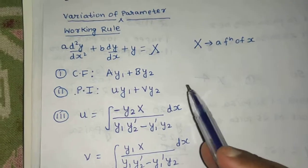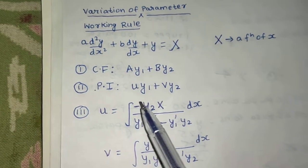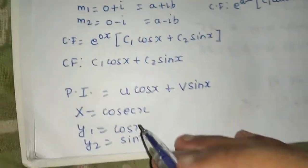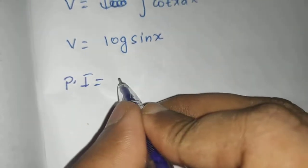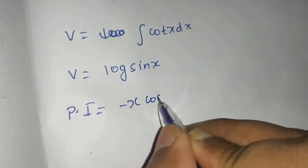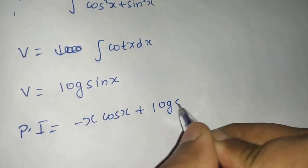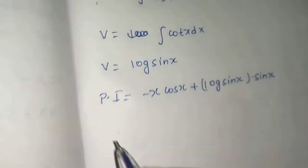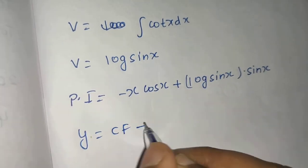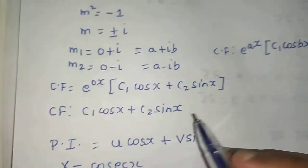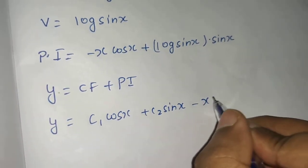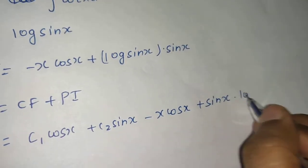Now the final answer is always of the form CF plus PI. The particular integral is u·y1 + v·y2, so that is (−x)·cos x + log(sin x)·sin x. The final solution is CF plus PI: C1 cos x + C2 sin x − x cos x + sin x · log(sin x).